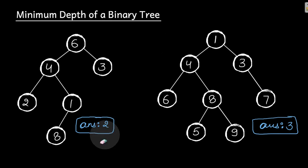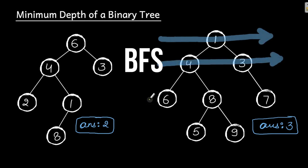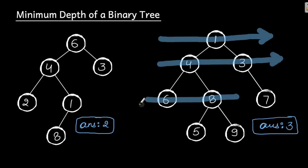What is the solution for this problem? Basically we do a BFS traversal. The first time we encounter a leaf node during BFS, the level at which that leaf node appears is going to be your minimum depth. For example, in BFS this is my first level, this is my second level, and this is my third level. When the left and right of a node are both null, that is the first leaf node, and that gives your answer.